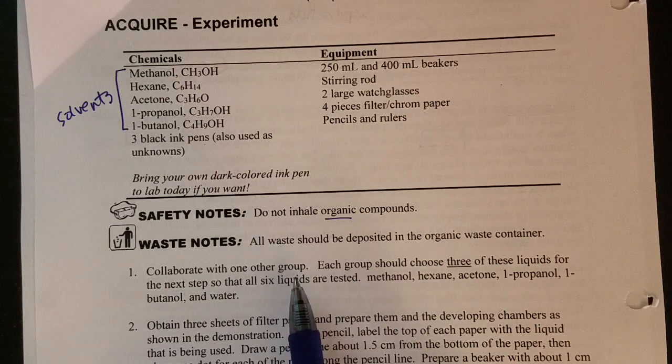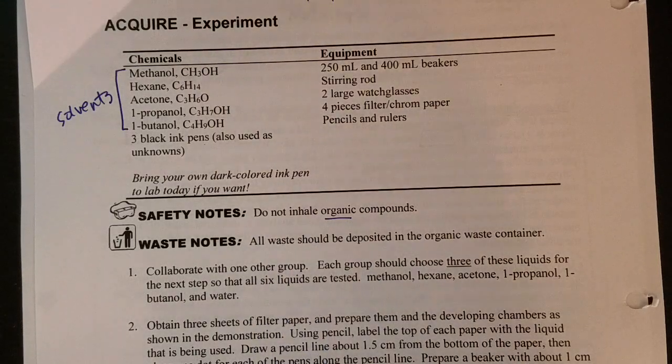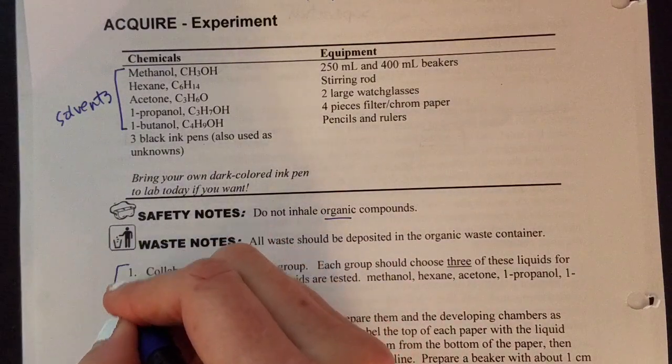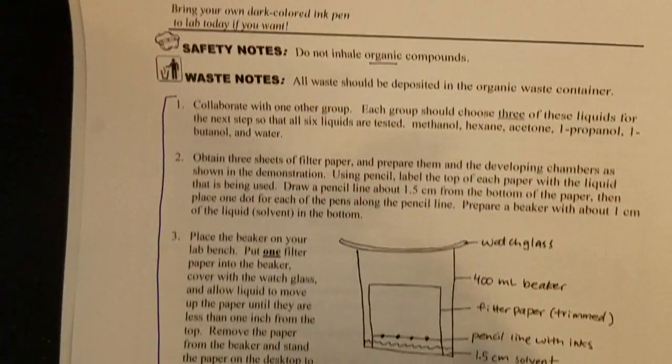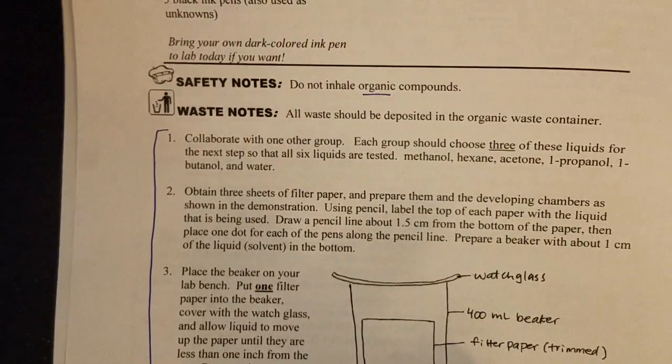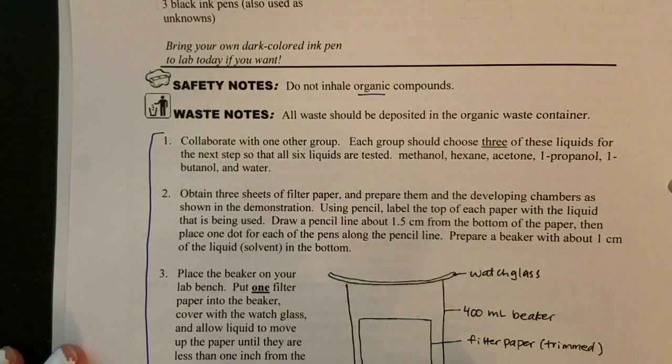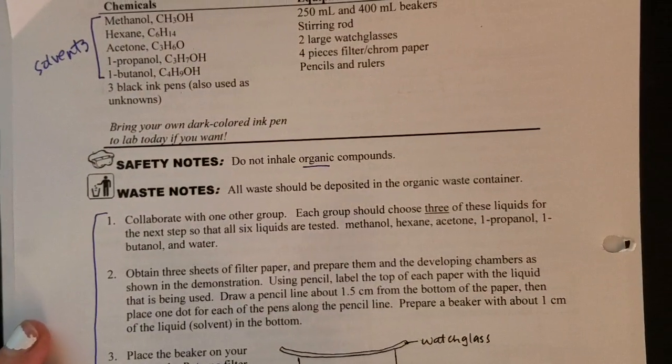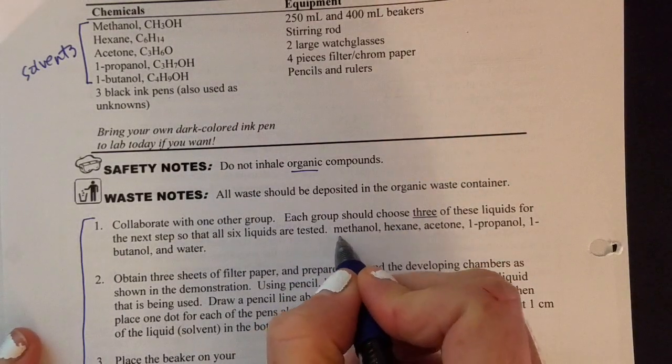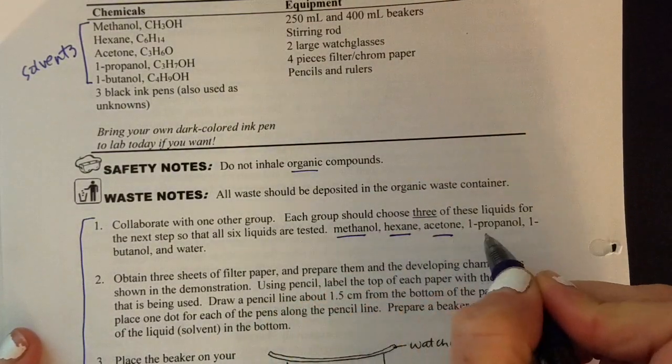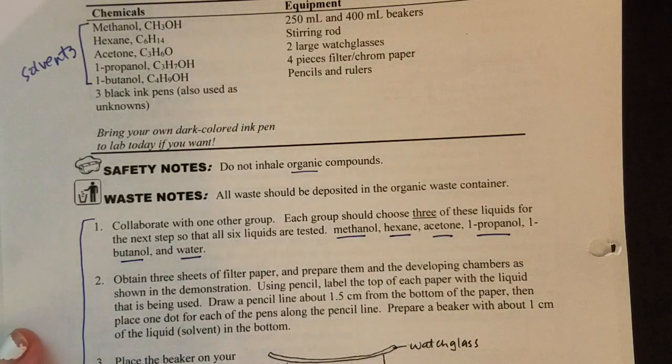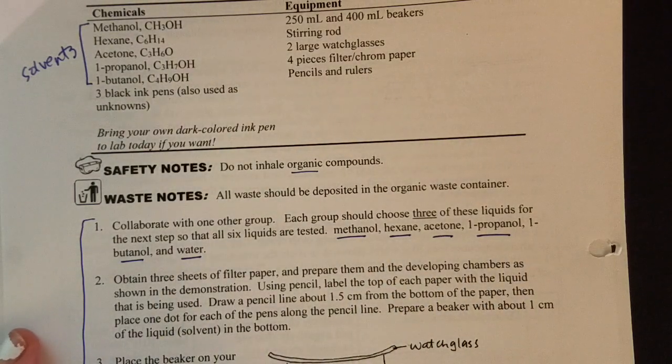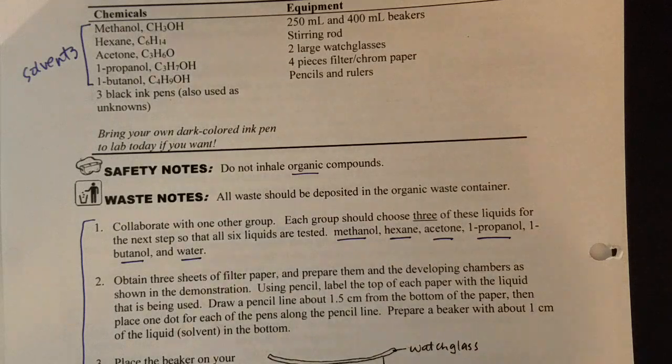So you will see in the video that you're not going to collaborate, but you will watch first. These first four steps will all be done at once for you. So you'll see six different beakers with six different solvents. And the six solvents that you will see tested will be methanol, hexane, acetone, propanol, butanol, and water. Pay close attention to what order those are in in the video. And then you'll be looking at results from that.